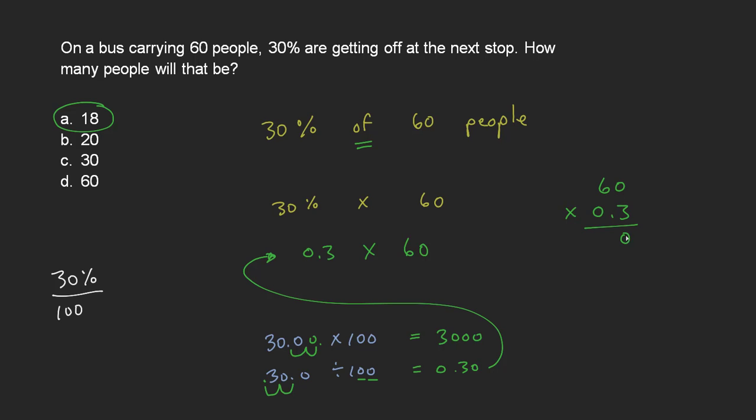0.3 times 60. I'm going to do 3 times 0 is 0, 3 times 6 is 18. And then when I do my next one, 0 times 0 is 0, 0 times 6 is 0. This gives me 180. However, if you have any decimals that show up in your original terms, you need to introduce them. For example, I have one decimal place here, and so I need to bring one decimal place into my answer. So the answer is 18, which corresponds to what I had here.